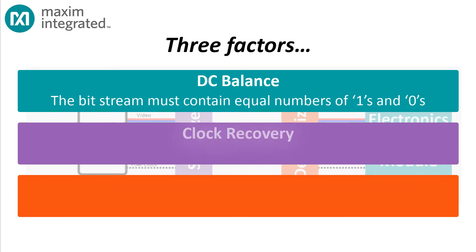The second factor is clock recovery. After all, the transmitter clock and the receiver clock aren't synchronized to some master clock source, so the receiver has to synchronize its clock to the incoming bitstream. But that means the incoming bitstream must be rich in level transitions. It can't stay in one state for too long, or the local oscillator at the receiver may drift and lose synchronization.